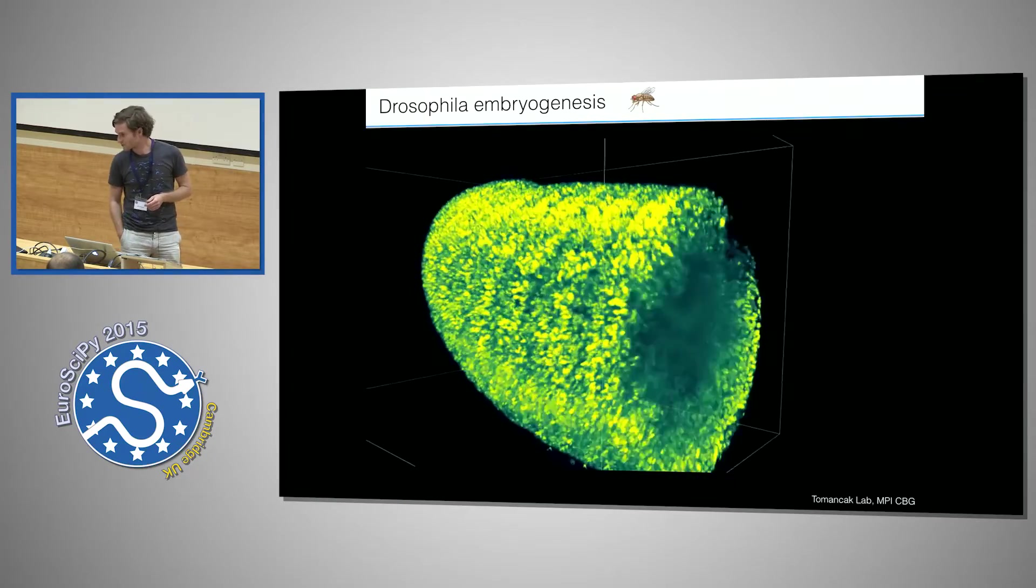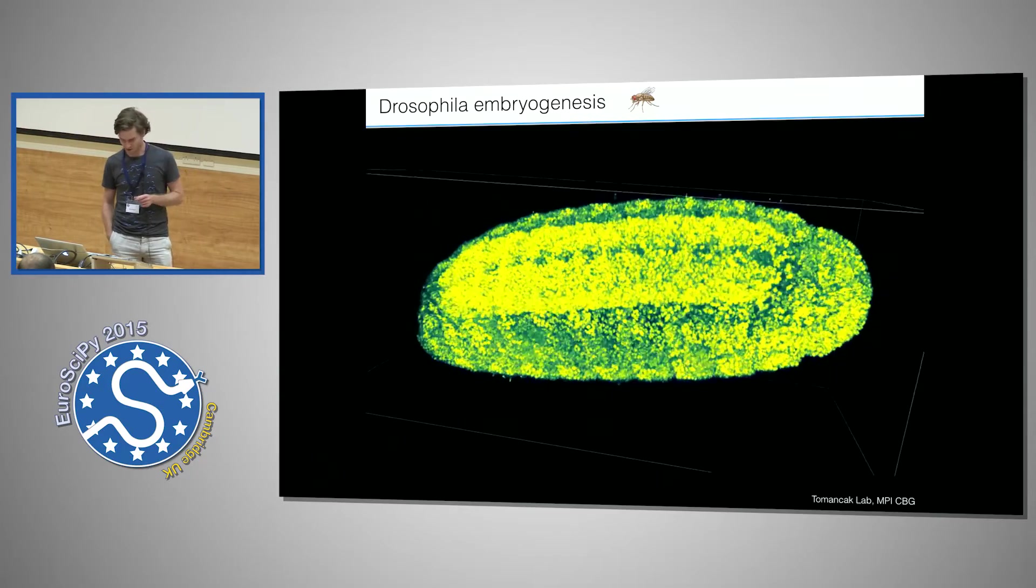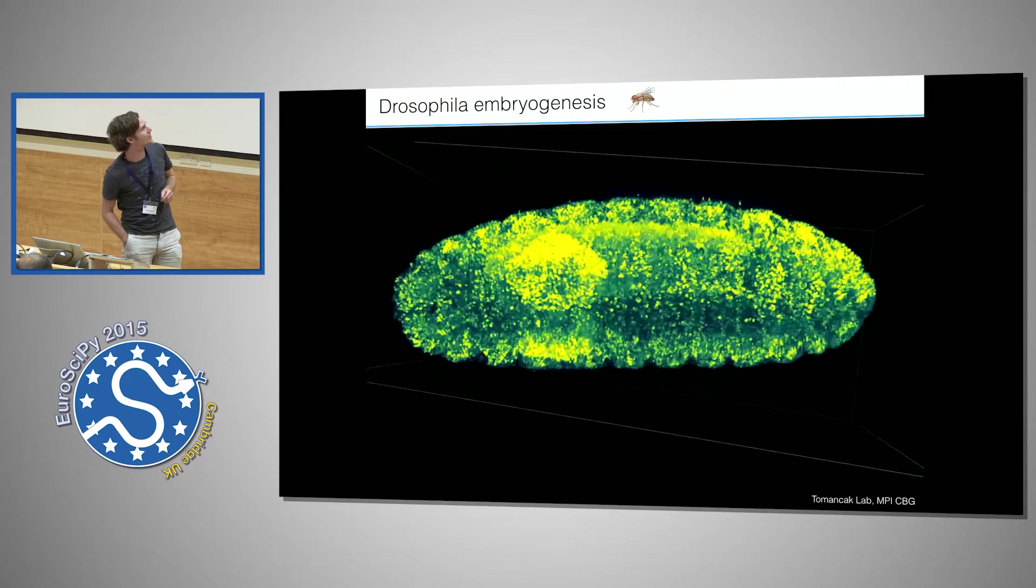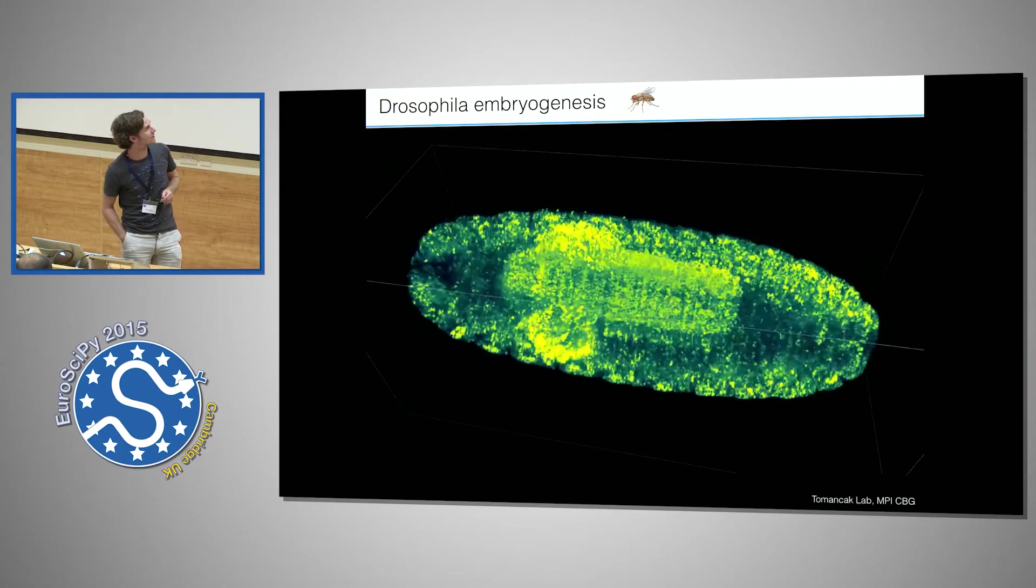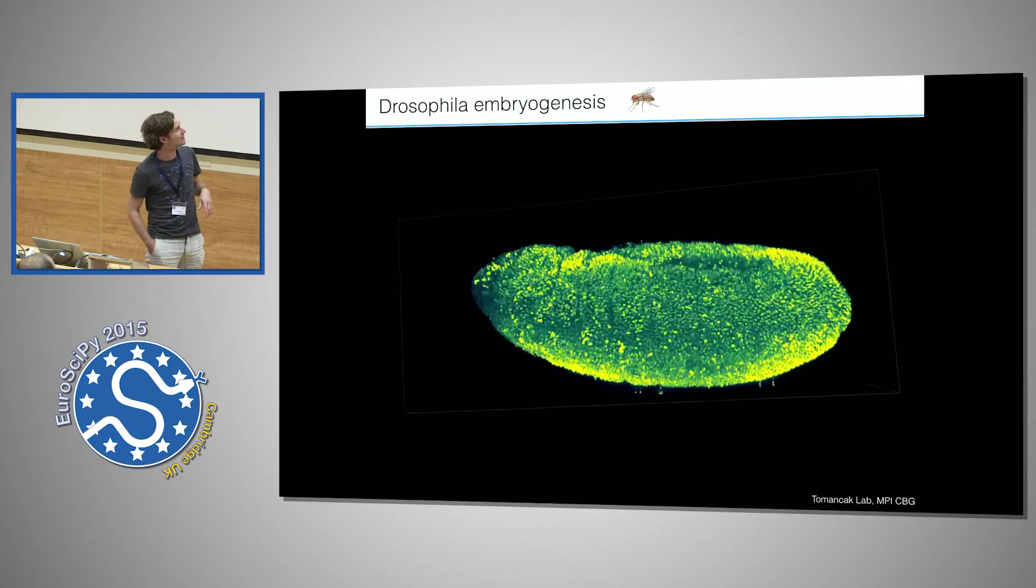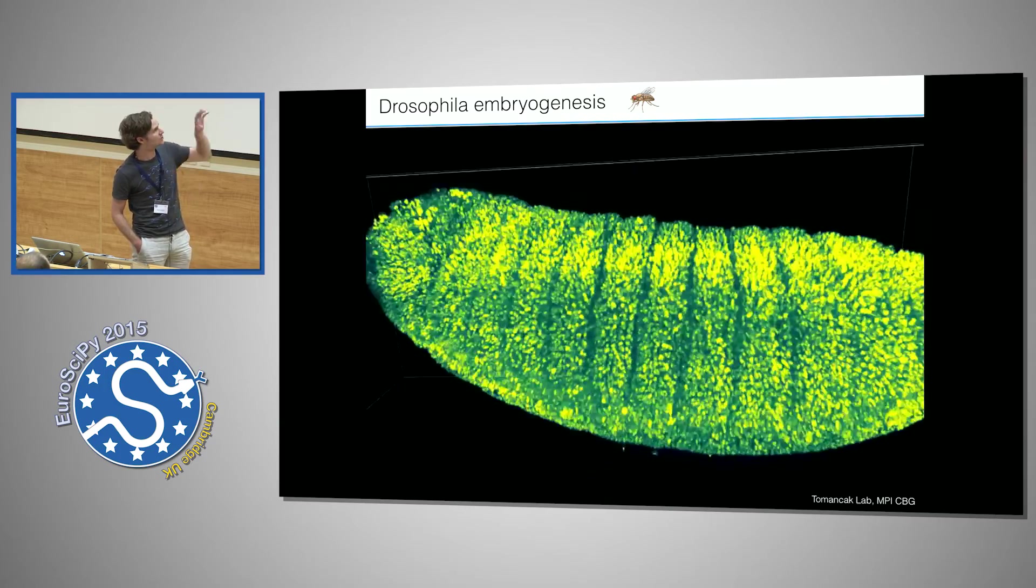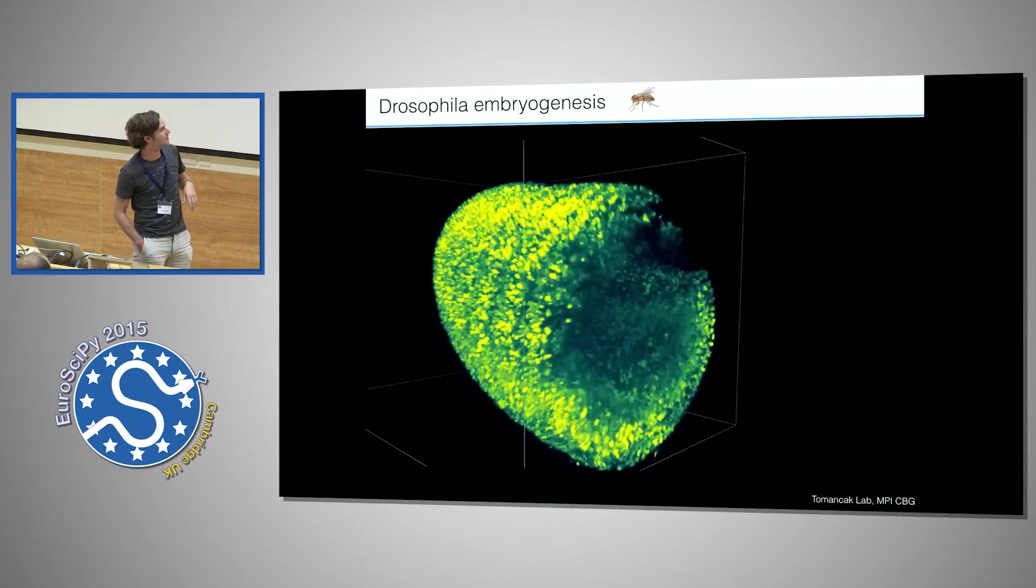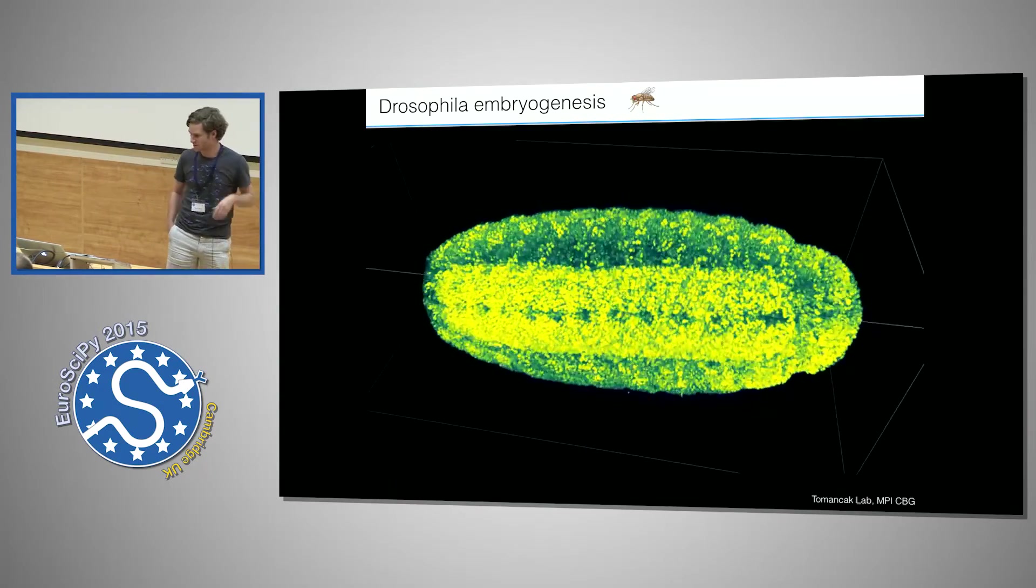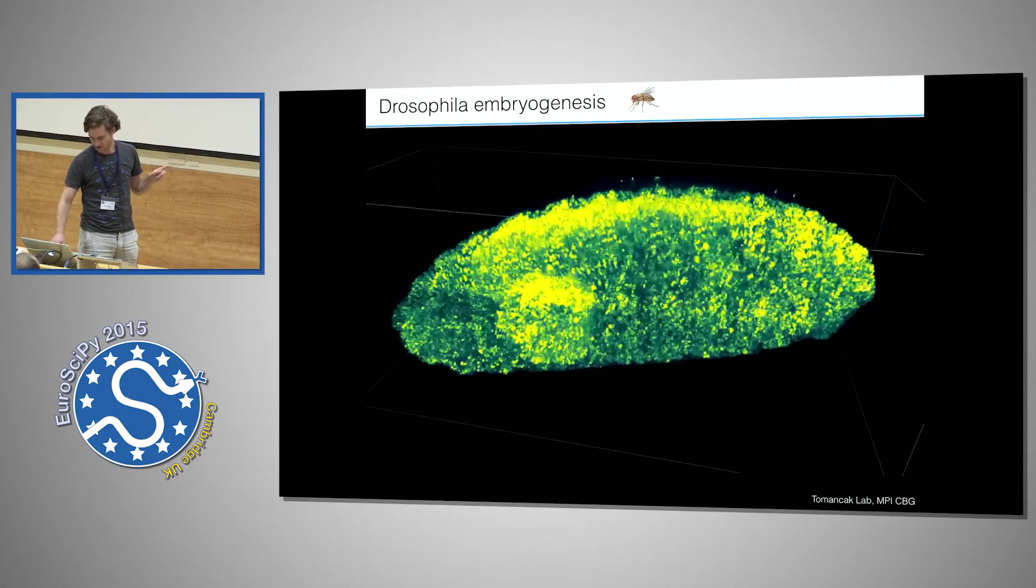As you can see here, this is an example from the Pavel Tomanchak lab at our institute. This is a little fruit fly which is not even one millimeter in the longer axis, and this is the first one day of embryogenesis of this little fly. At the beginning you see how everything is very homogeneous, but then chemical gradients and morphogens and a lot of signaling between the cells lead to a structuring and patterning. At the end there's the nervous system popping up and every little dot you see here is a fluorescence marked cell.